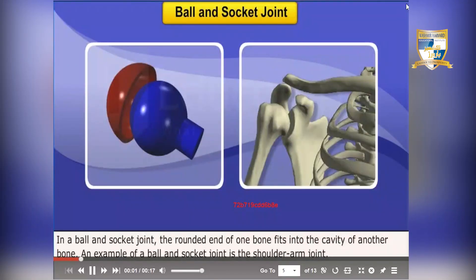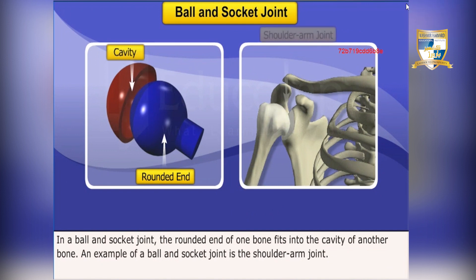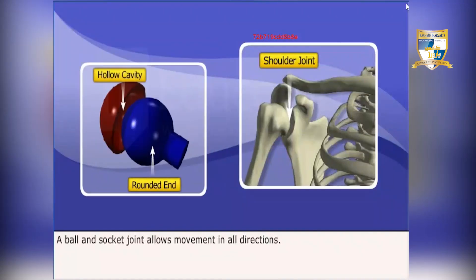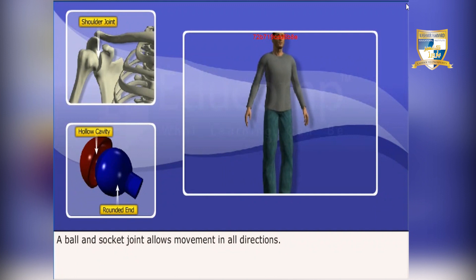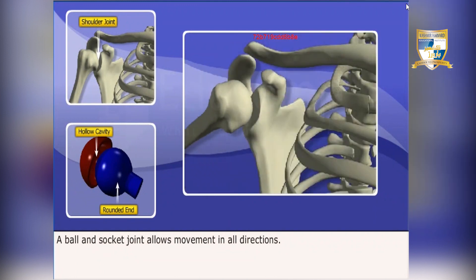In a ball and socket joint, the rounded end of one bone fits into the cavity of another bone. An example of a ball and socket joint is the shoulder-arm joint. A ball and socket joint allows movement in all directions.